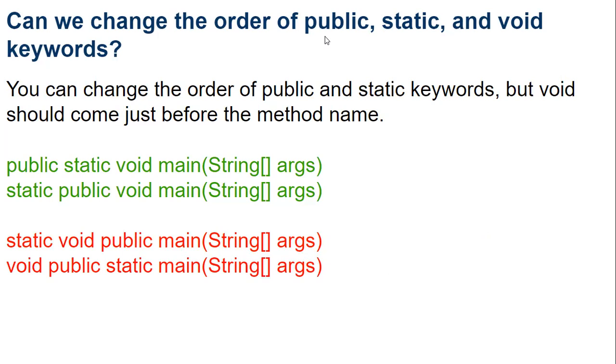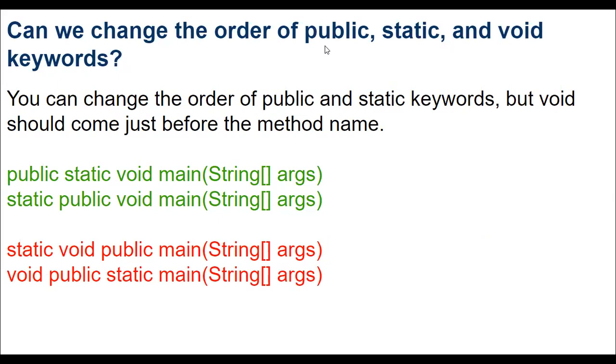So that's all about public static void and main. We discussed about why it is public, why it is static, why it is void, and why the name is main. That's all about this video. Hope you have enjoyed this video. See you in the next video, thank you.